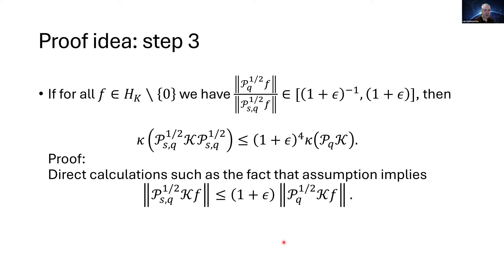The last step: suppose you have this multiplicative approximation guarantee on the two preconditioners. To get that the condition numbers are close, you apply the preconditioned version of K with the approximate preconditioner to some function F, substitute the approximate preconditioner with the exact preconditioner, and only lose a (1+epsilon) factor by the multiplicative approximation property. Doing this multiple times for lambda_1 and the smallest eigenvalue gives the approximation in the condition number. That completes the high-level idea of the proof and the talk. I'll leave time for questions.